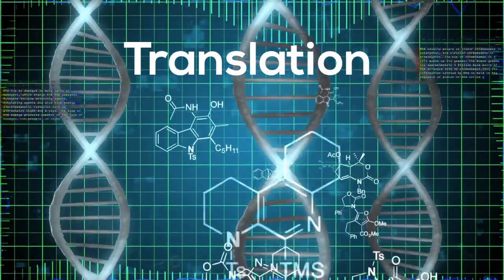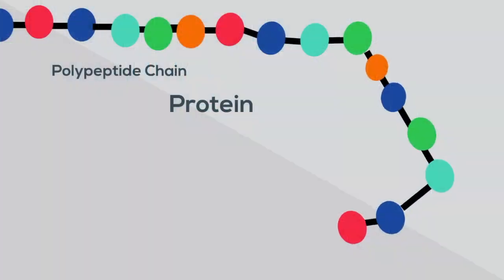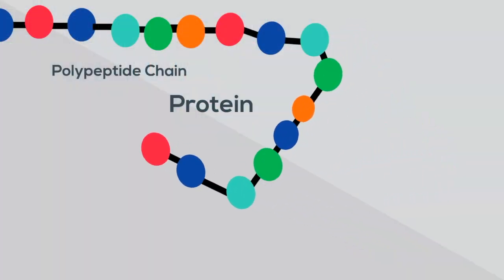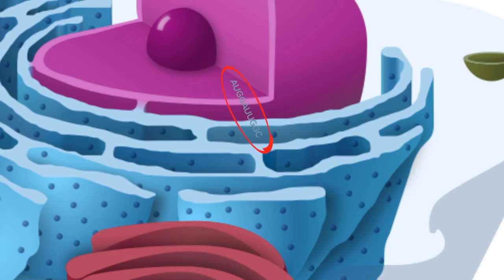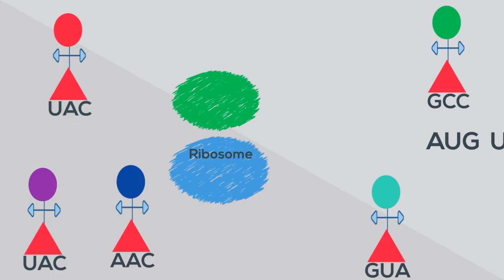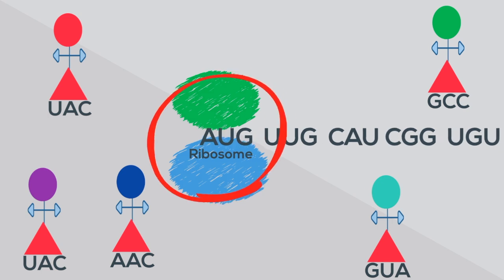Translation occurs at the ribosome and is an important stage of protein synthesis. Messenger RNA that has traveled from the nucleus arrives at a ribosome. Ribosomes are found in the cytoplasm and in some cells at the ER.